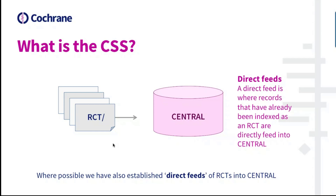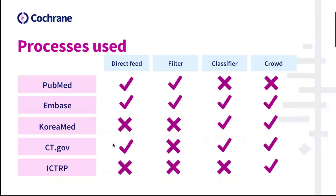With PubMed we use a very simple methodological filter based only on record publication type, and we then directly feed the records identified from this filter into CENTRAL. With Embase we use all four techniques. We have a direct feed of records indexed with the MeSH term RCT. We then have a very comprehensive third-generation methodological filter to identify records that might be RCTs but have not been indexed as such, and we send those records through the machine learning RCT classifier, which knocks out a sizeable proportion of non-RCTs.